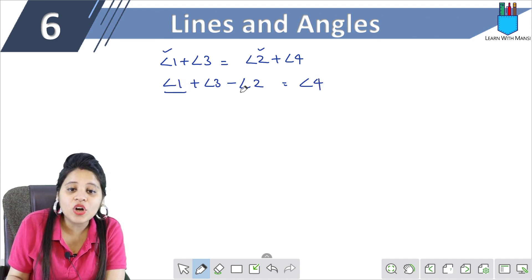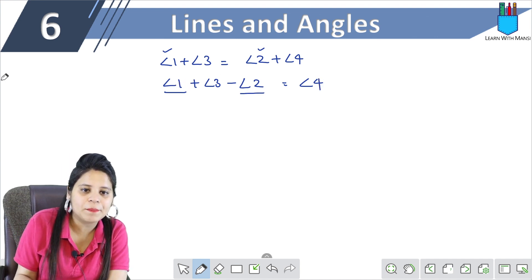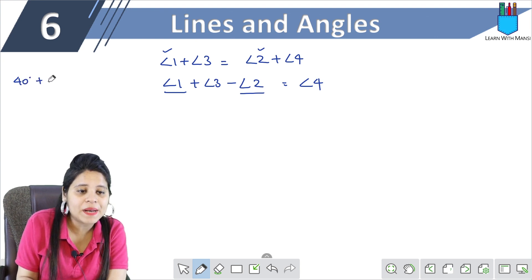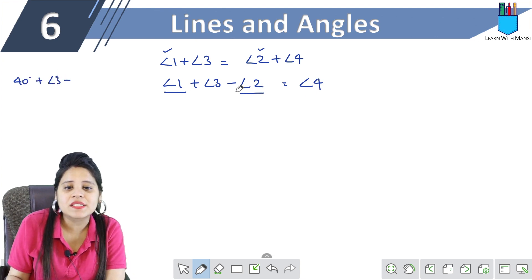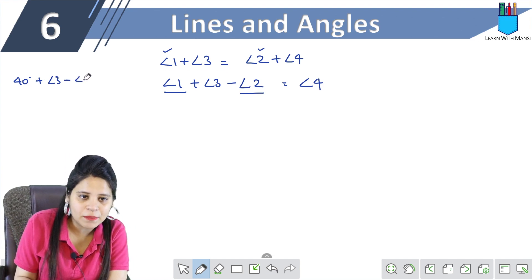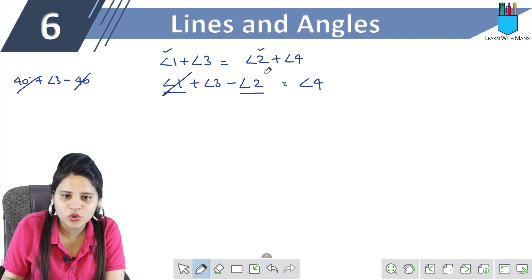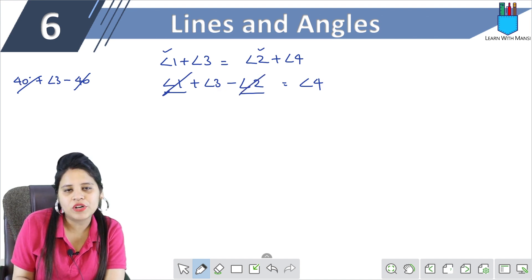Now, this angle and this angle are equal. For example, both are 40 degrees. I am just going to explain it. So 40 degrees plus angle 3 minus angle 2. If angle 1 is 40, this will be minus 40. So these two will be cut. So these two cancel out. See, 40 minus 40 is 0.